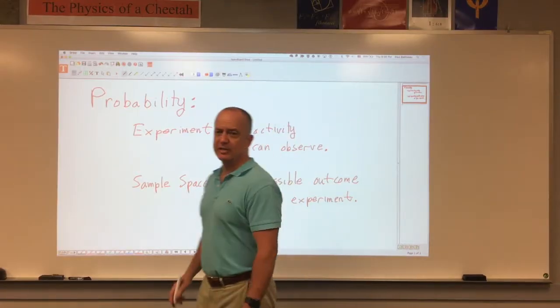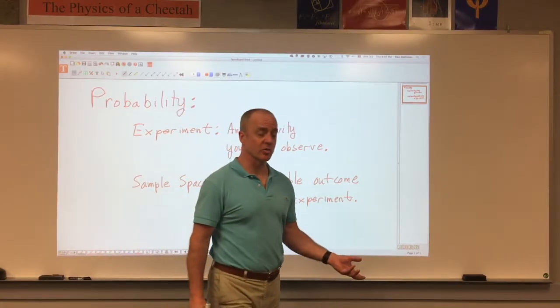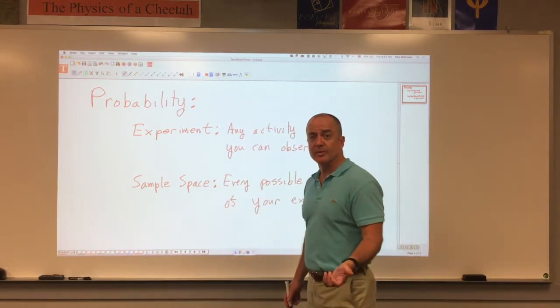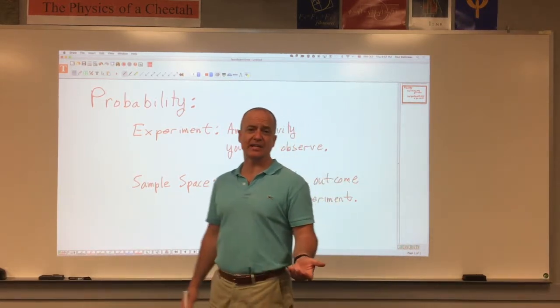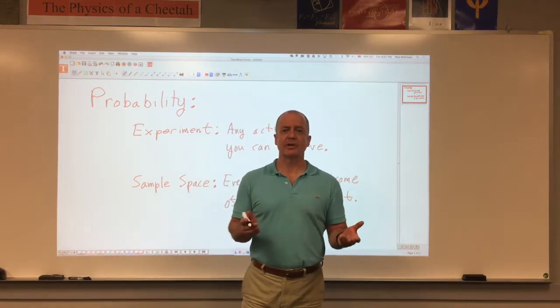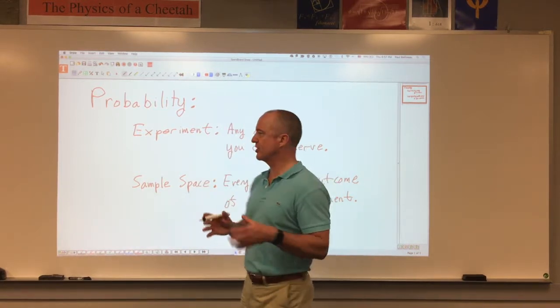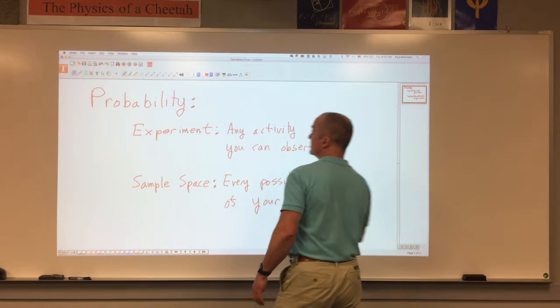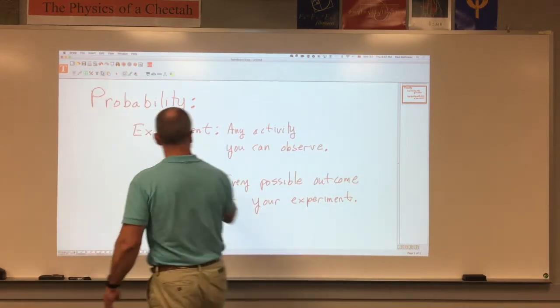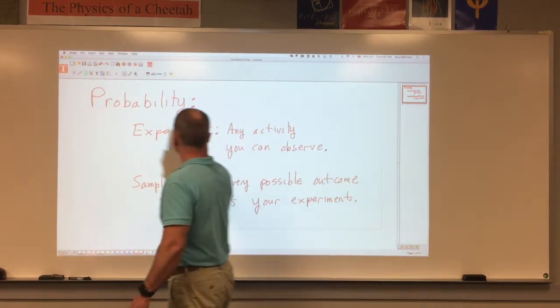So, you've got an experiment. You're going to do something. You're going to flip a coin. You're going to roll a die. You're going to roll two die if it's backgammon. You're going to flip a coin to see which team starts the match. You run your experiment. It has a sample space. That's everything that can happen. Let's write down some of these possibilities, just so you have some examples.